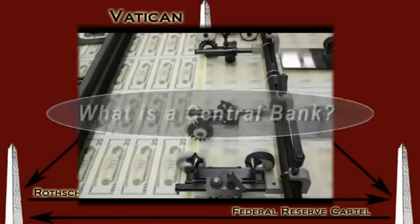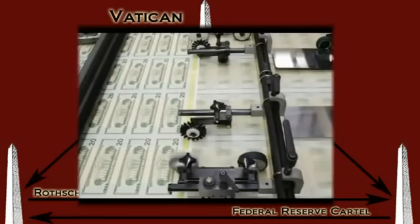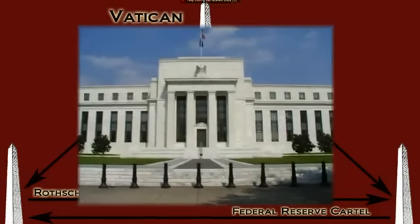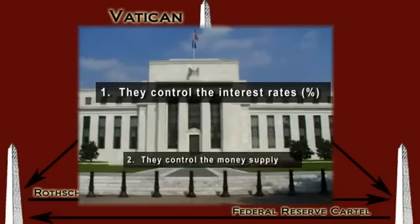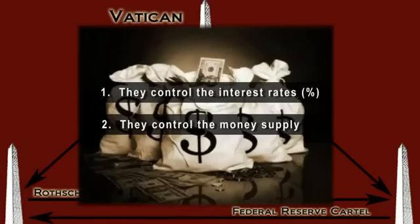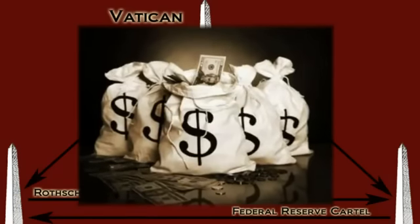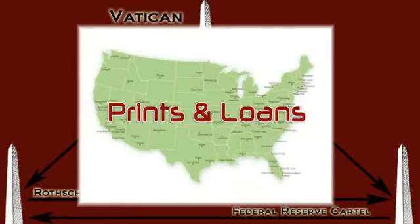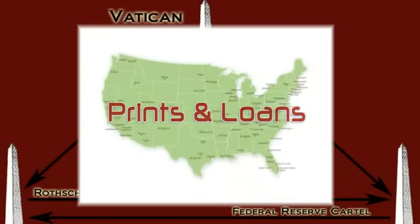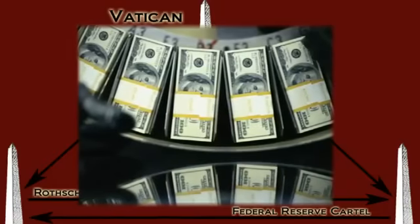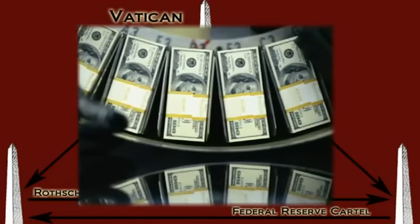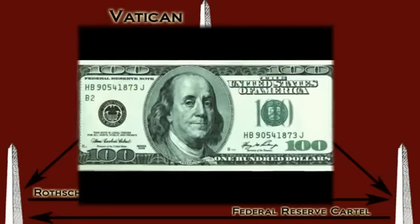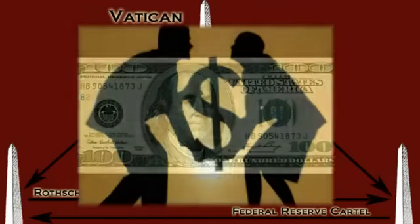So what is a central bank? The central bank is an institution that produces a currency for an entire country. Two powers are inherent in central banking practices: number one, they control the interest rates, and number two, they control the money supply and inflation. The central bank does not print the money supply and hand it over to the country. Instead, the central bank prints the money and loans it to the country at interest. Then through increasing and decreasing the money supply, the central bank regulates the value of the currency being issued. It is critical to understand that the long-term product of the central banking system is debt.